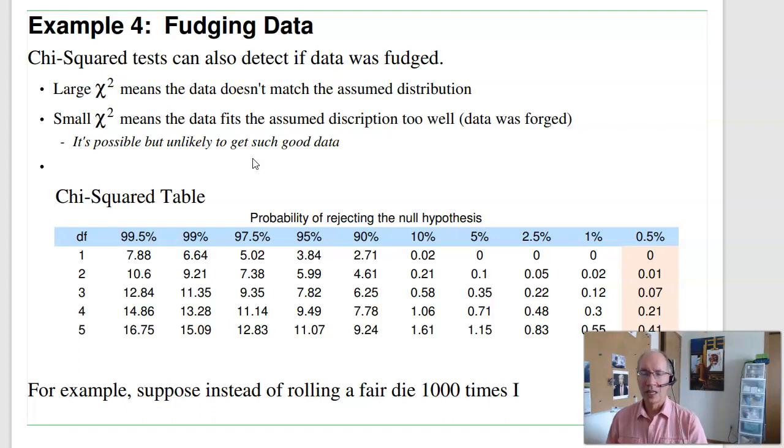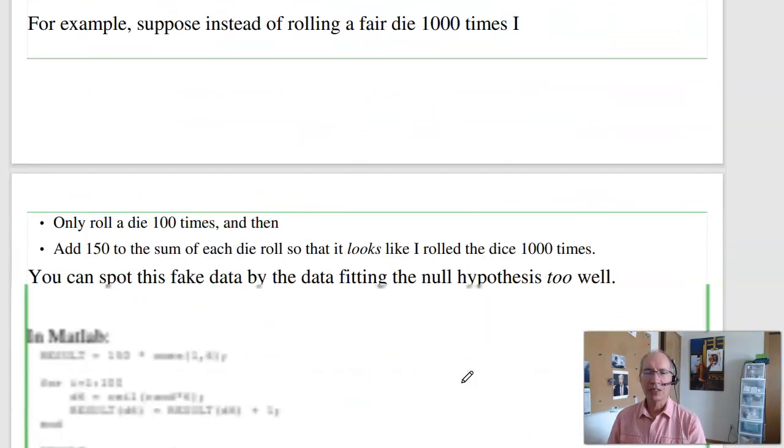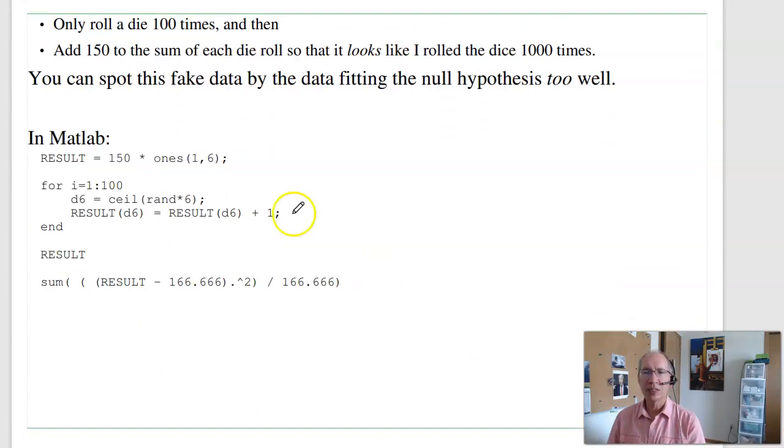Another thing you can do with a chi-squared test, I can detect whether you fudged your data or not. A large chi-squared score means the data is inconsistent with your distribution. A really small chi-squared score says you got either really lucky, or you fudged your data. For example, suppose instead of rolling a fair die 1,000 times, I decide to cheat. I'm kind of lazy, so what I'm going to do is I'm only going to roll the dice 100 times, then add 150 to the total. That way it looks like I rolled the dice 1,000 times, but I didn't.